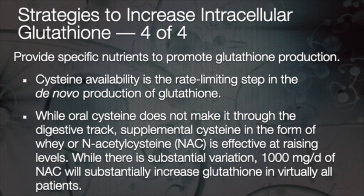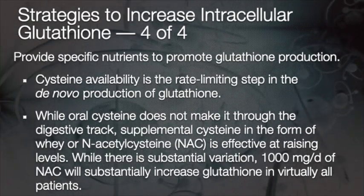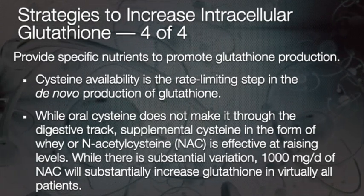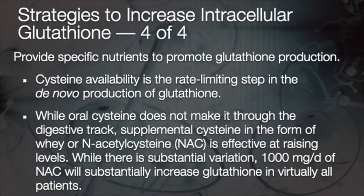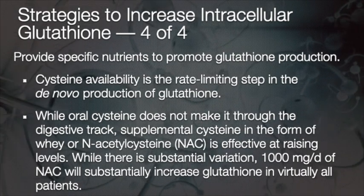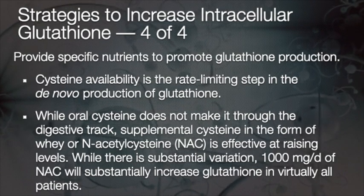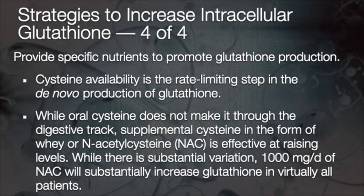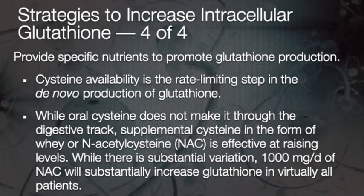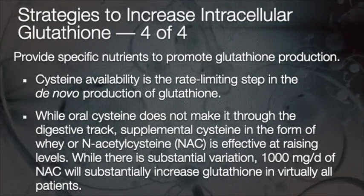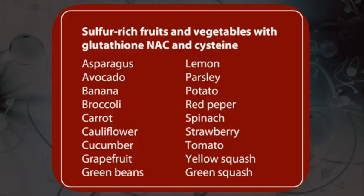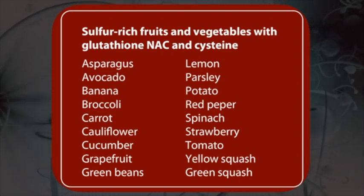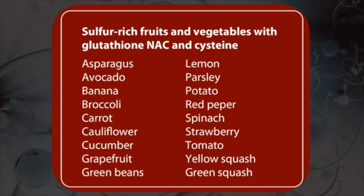An interesting way of increasing glutathione levels is to provide specific nutrients that promote glutathione production in the body. The availability of cysteine is one of the rate-limiting steps in the body's internal production of glutathione. Oral cysteine is a challenge because it gets destroyed or is not absorbed well in the digestive tract, so supplemental cysteine comes in the form of NAC (N-acetyl cysteine), which is pretty effective — even 1,000 milligrams of NAC will substantially increase glutathione in virtually all patients.